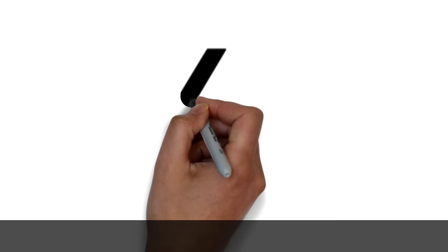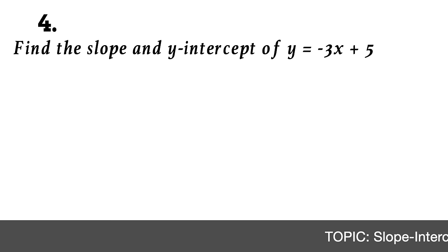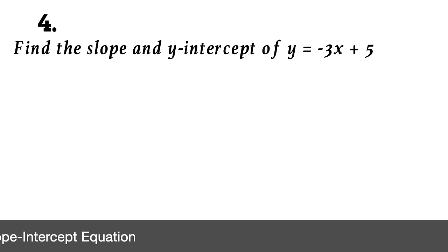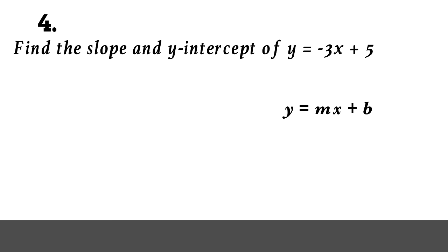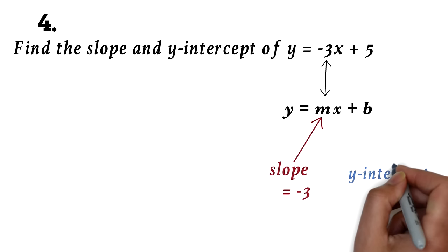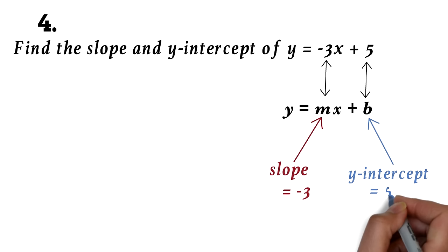Question 4. Find the slope and y-intercept of the line y = -3x + 5. Slope questions are very common on the GED math. For this question, use the slope-intercept form: y = mx + b. This is given on the GED formula sheet. In this form, the slope is m — the coefficient of x. So here, -3 is our slope. The y-intercept is b — the constant, or what is without the x. So 5 is our y-intercept. Slope is -3, y-intercept is 5. Pretty straightforward once you know the formula. We will look at some twists to this question later in this video.